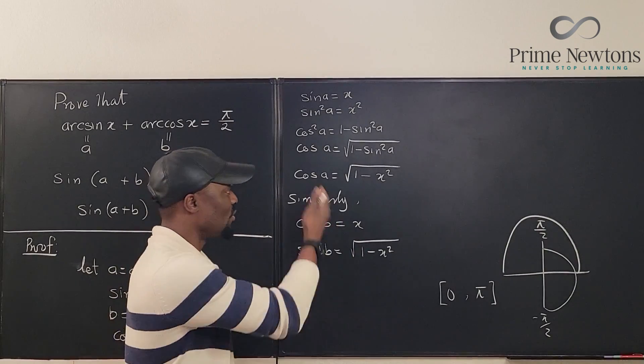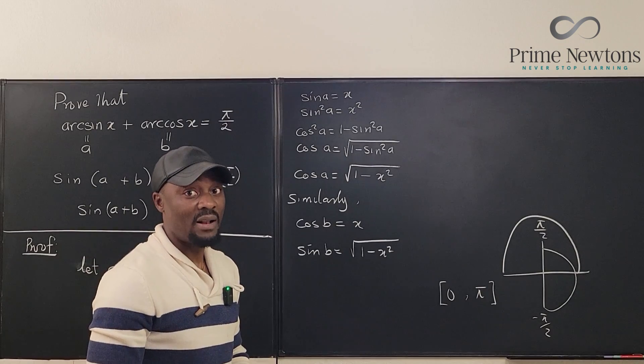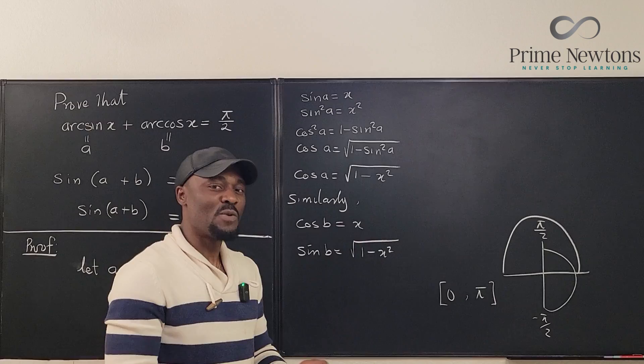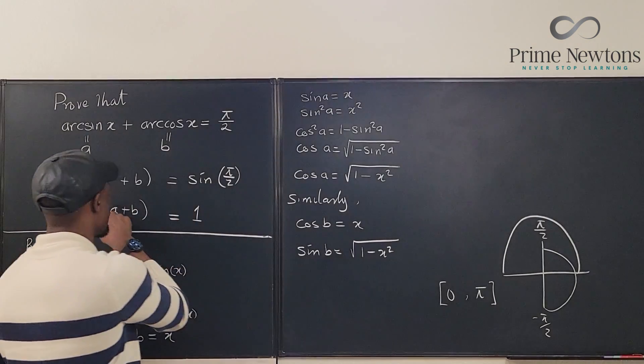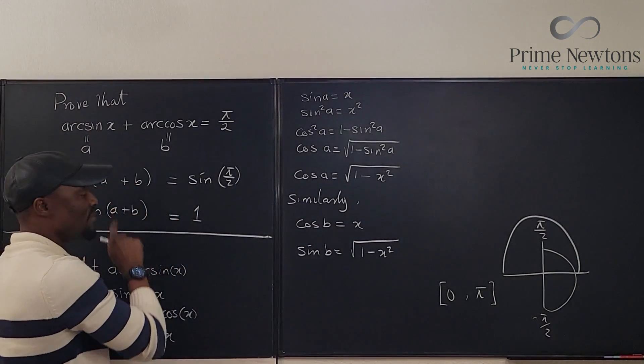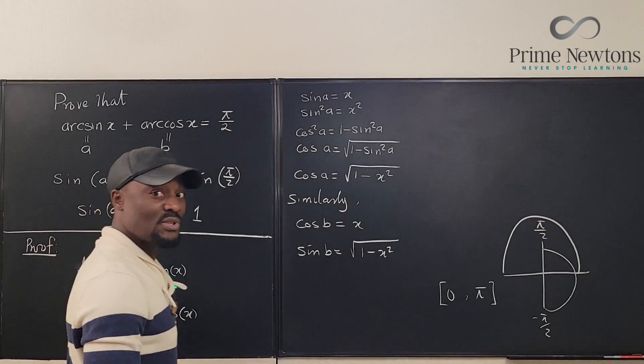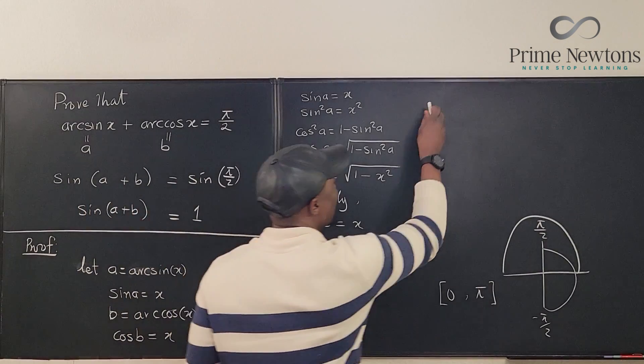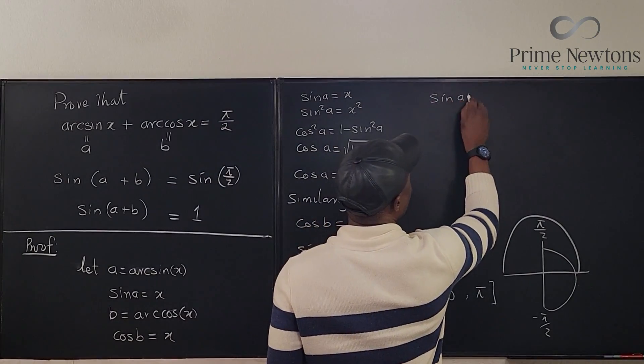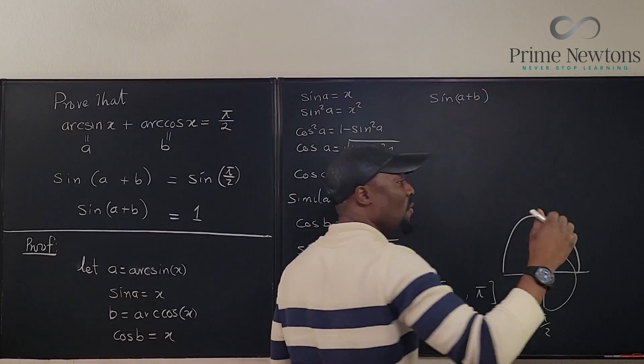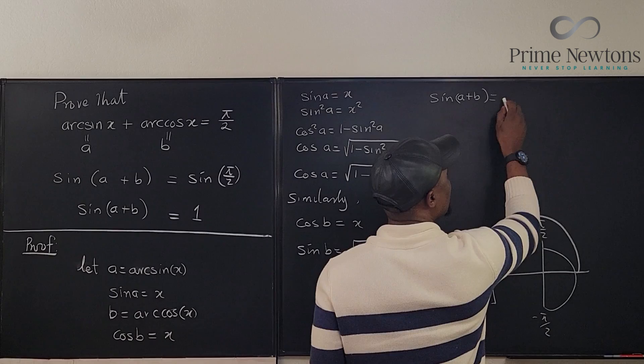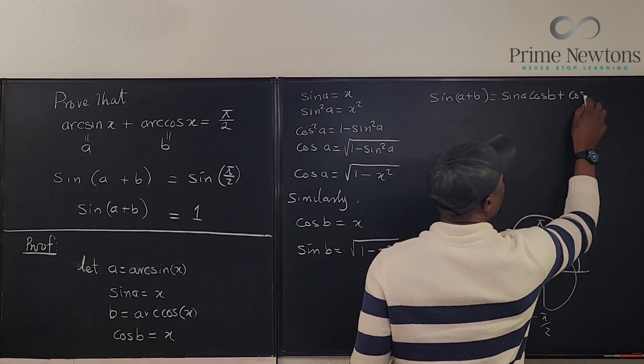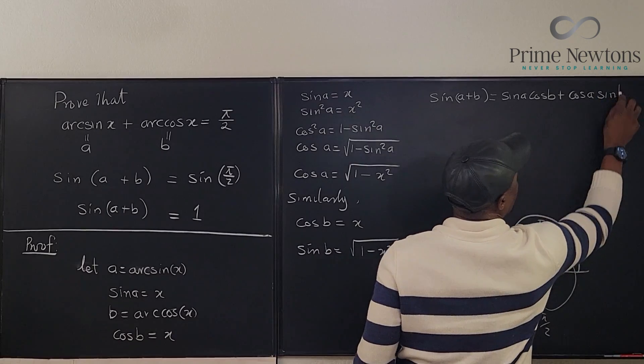So now, what do we do with the two things that we have? Well, let's do something. What do you think is the sine of two angles? Remember, this is what we want to try and achieve. Sine a plus b, we want to see what sine a plus b is going to give us. If it gives us one, it means what we're saying is right. So let's go here and say that sine a plus b, based on what we learned in trig, is basically sine a cosine b plus cosine a sine b.